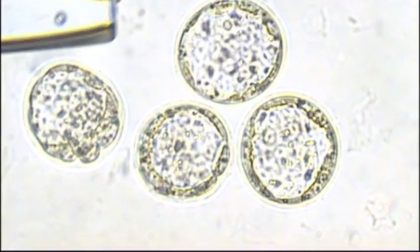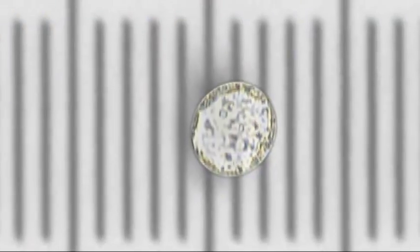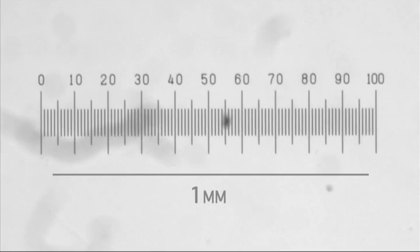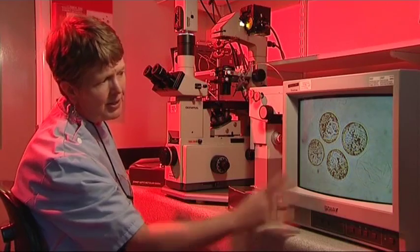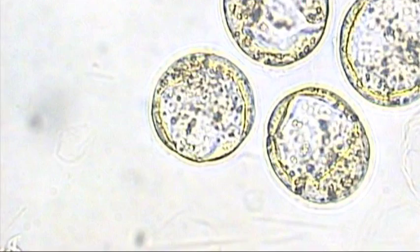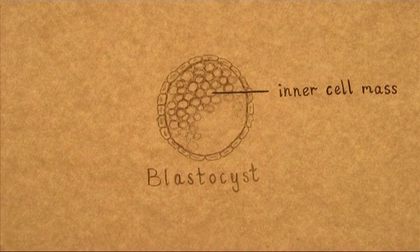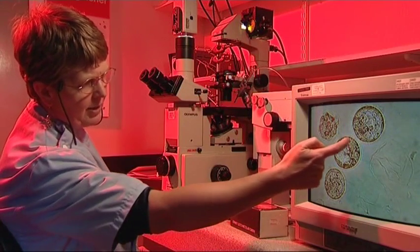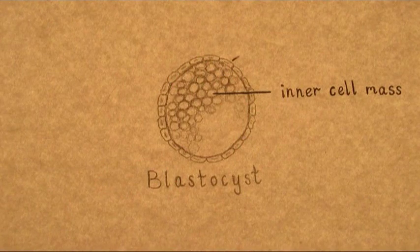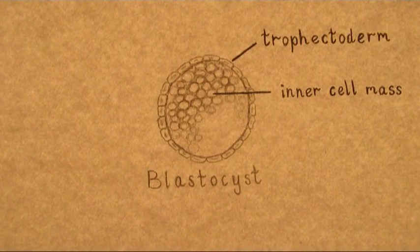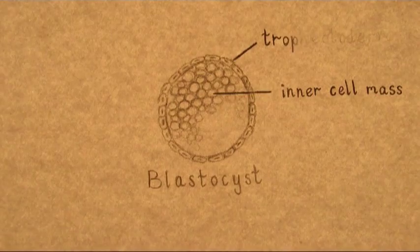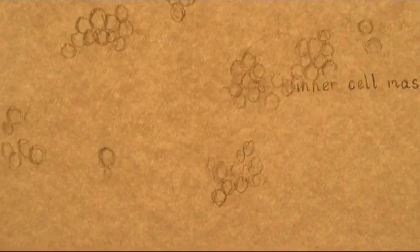What we're seeing here is the blastocyst stage of development. It's smaller than a pinhead, actually. You can't see it without the microscope. So basically, at this stage, the cells in the embryo, these are the cells here, they can make any tissue at all. What we have to do is isolate these cells. One way is we can remove the trophectoderm cells so that we're just left with a clean inner cell mass.